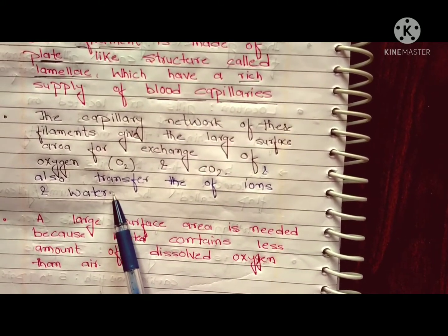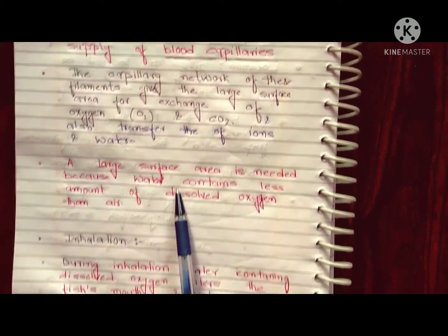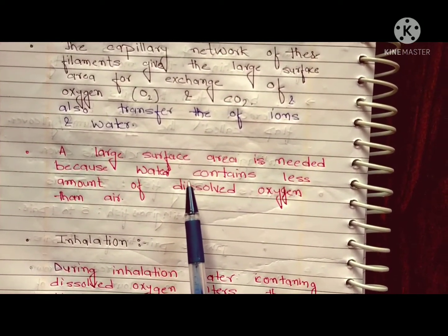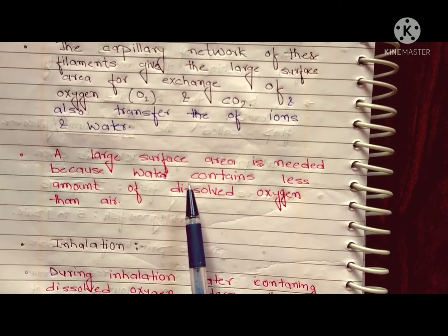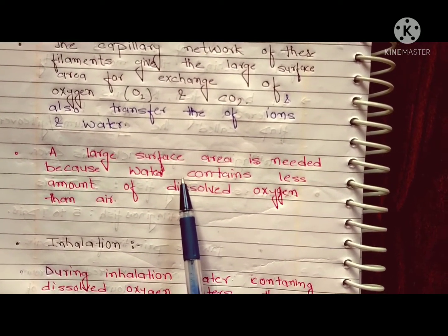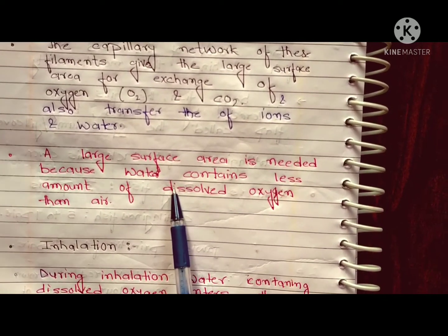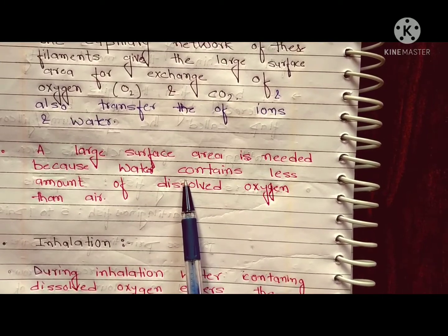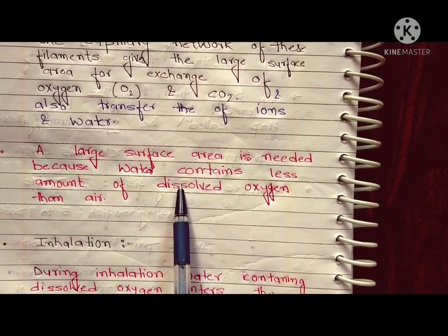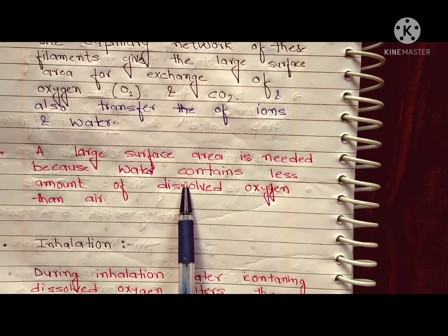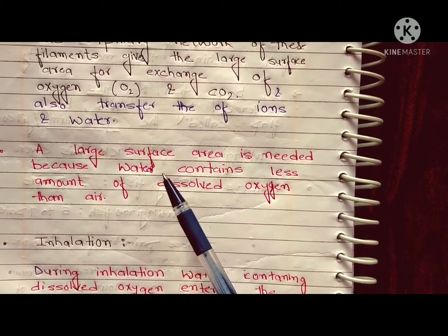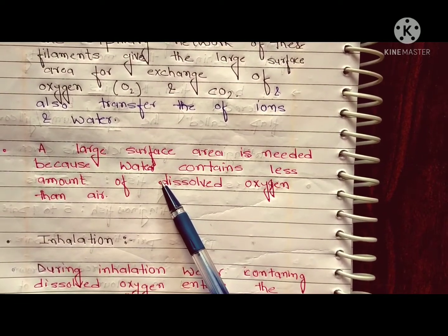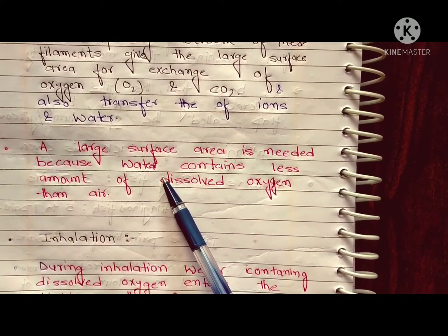Ions and water can also be transferred across the gills. This large surface area is necessary because, compared to air, much less oxygen is dissolved in water. So fish need a large surface area and well-functioning blood capillaries to extract more oxygen from the water.